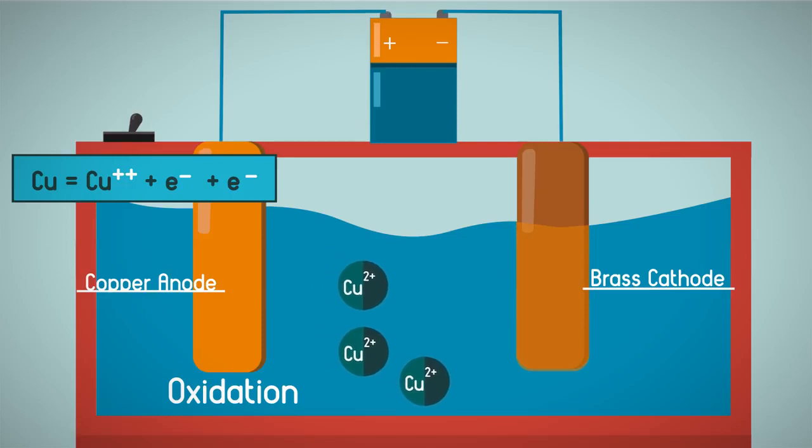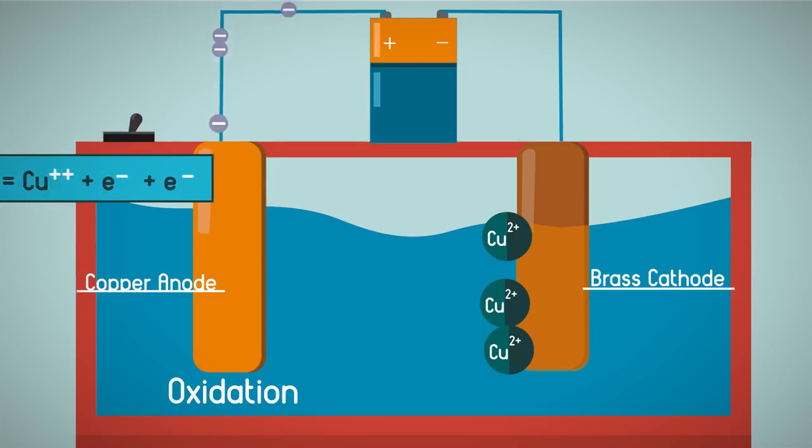So the copper ions move from the anode to the cathode through the solution, but not along the wire.